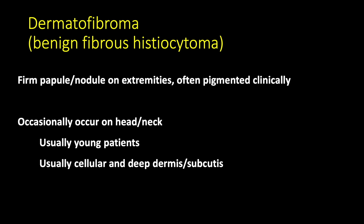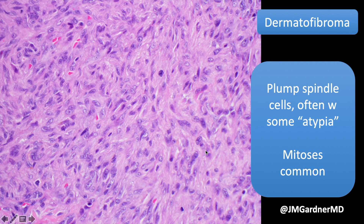Dermatofibromas, also known as benign fibrous histiocytoma, most often occur on the extremities or trunk, but they can occur on the head and neck. When they do, they tend to look different from conventional dermatofibromas — a bit bigger, more cellular, often a deeper nodule in the dermis or subcutis. Clinically they can look like a cyst because they're deep and have little epidermal change overlying them. I tend to see these most often in kids and young adults, so it's important to know dermatofibromas can occur on the head and neck and may look atypical.